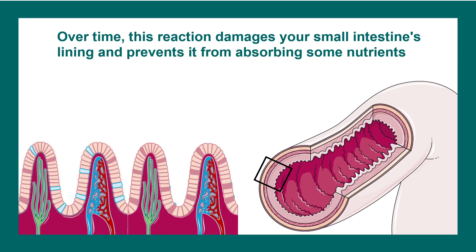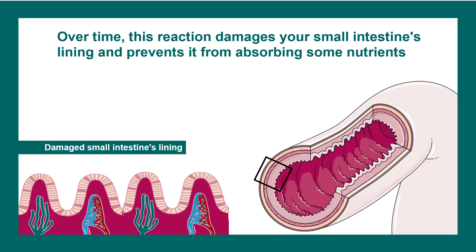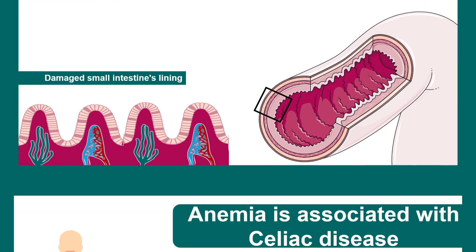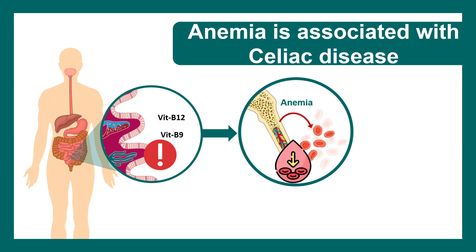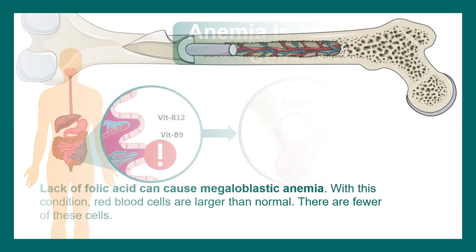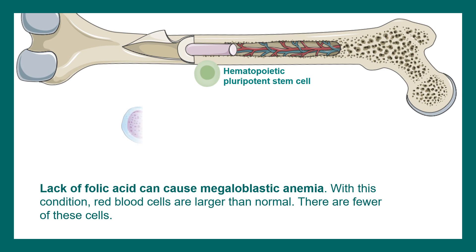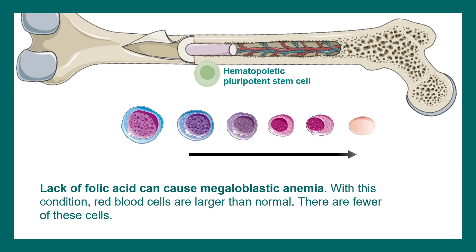Over time, the lining of the intestine gets eroded in celiac disease, and that causes many problems, such as preventing the absorption of vitamin B12 and vitamin B9 from the diet. This is a prime cause of anemia because both these vitamins are associated with RBC maturation. Vitamin B9, or folic acid, is especially important for RBC maturation, and when it is malabsorbed, there is a problem with RBC production.